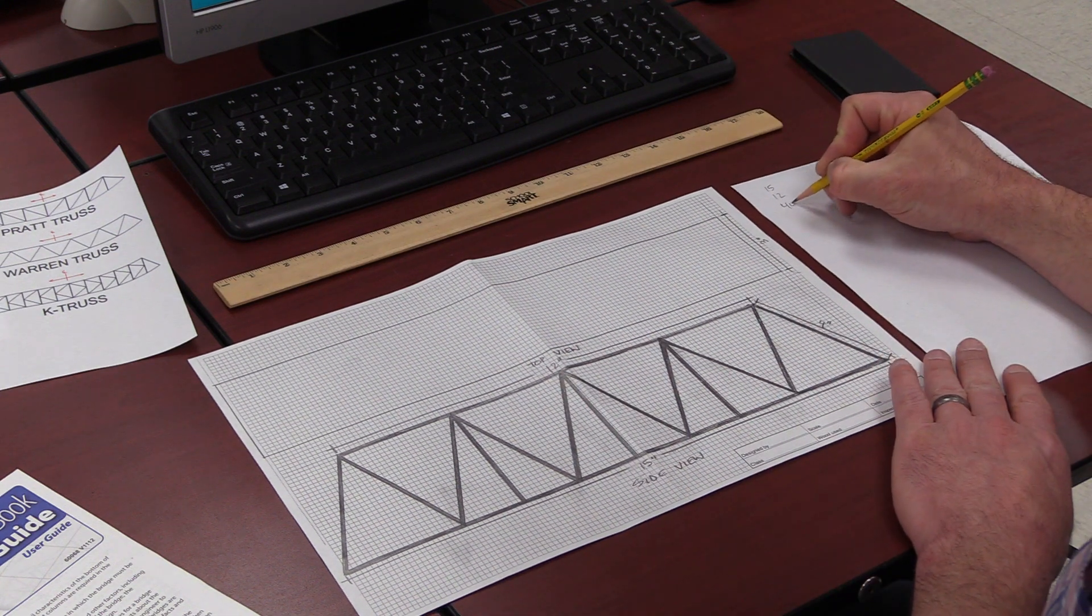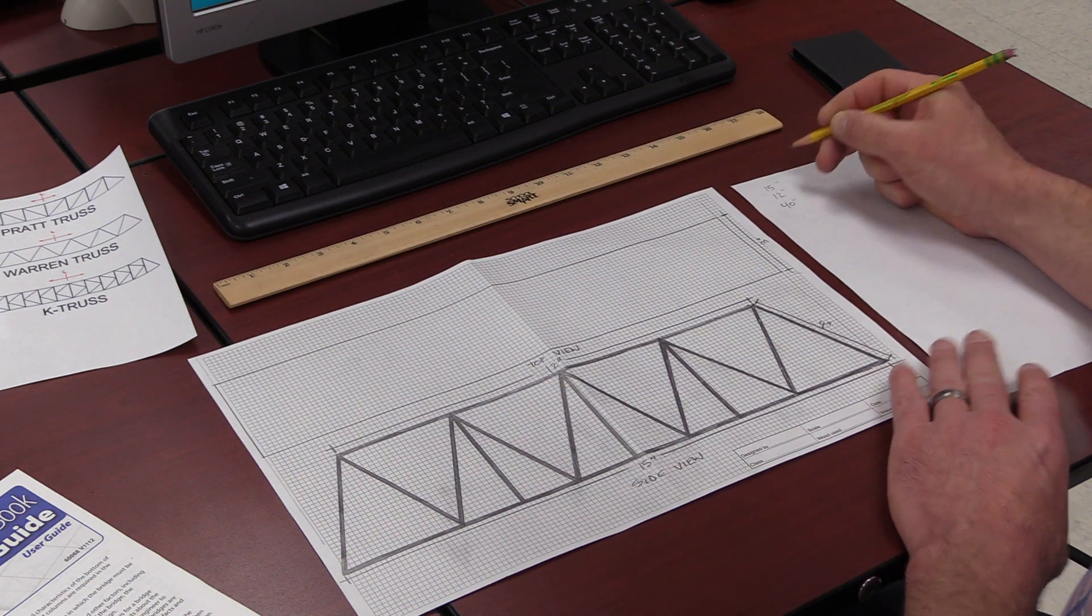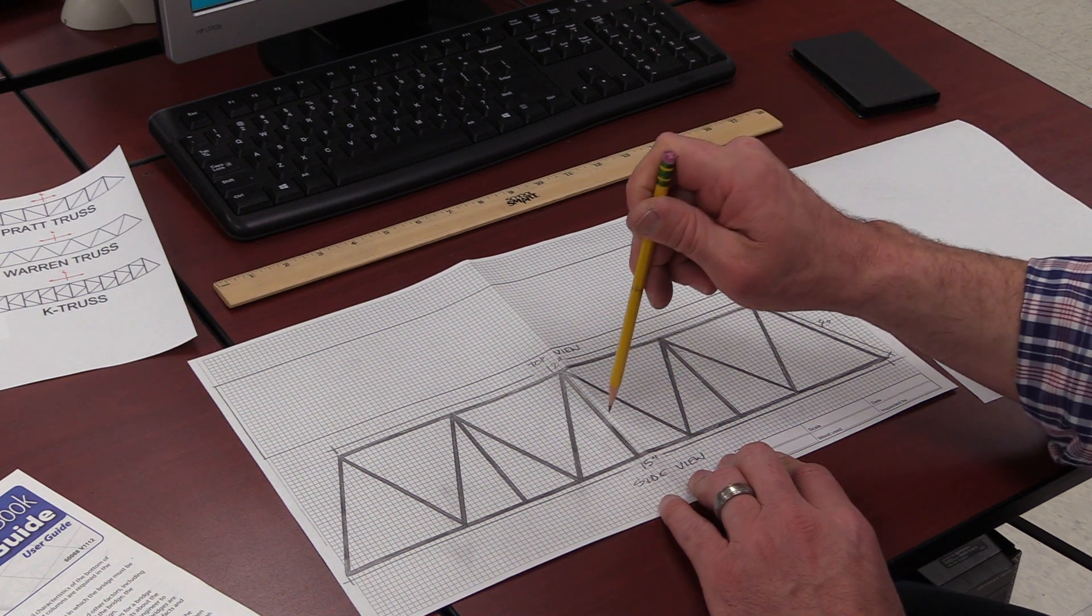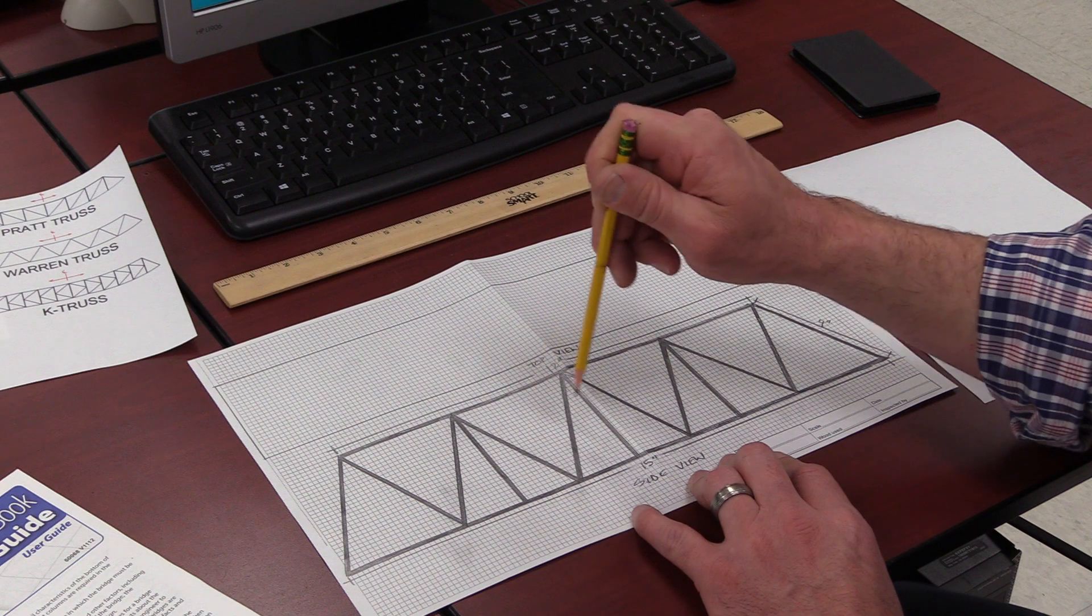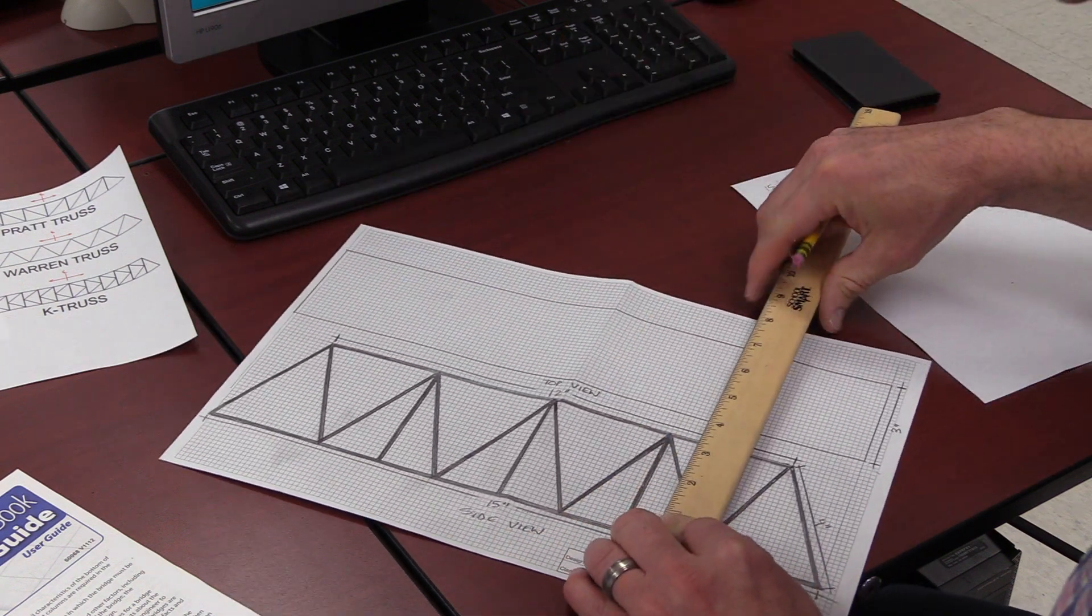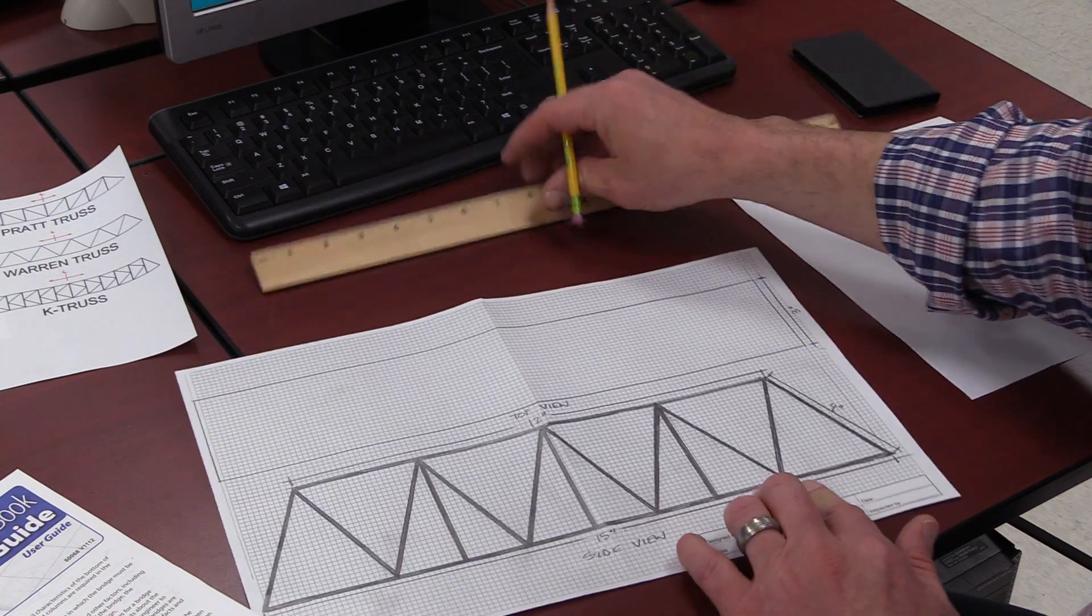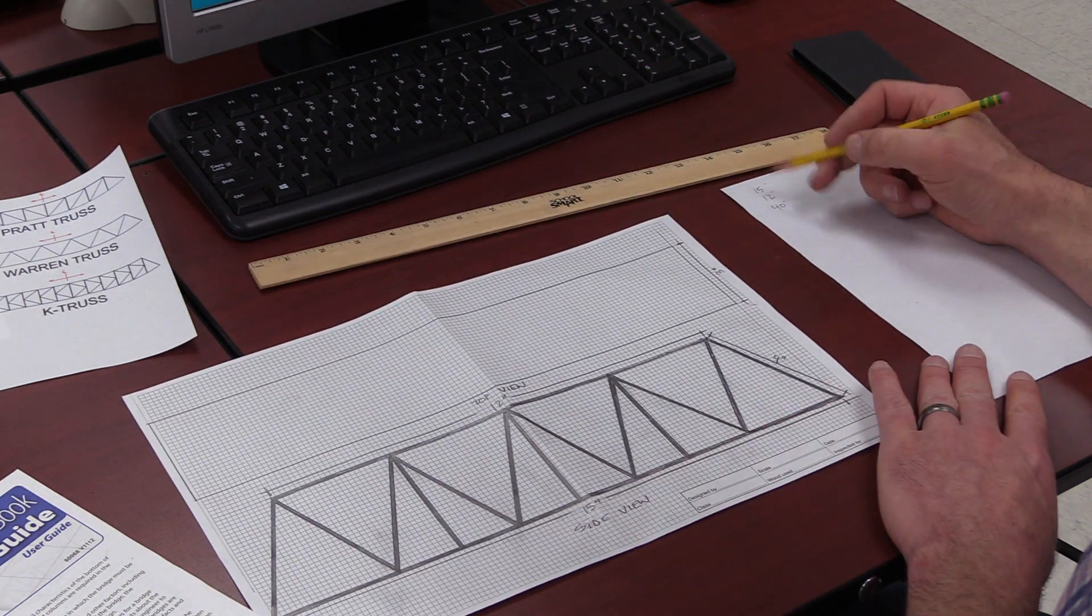And then the last thing to add up are these vertical webs. So I've got three of those and I know my bridge height was three and a half per my design. So three times three and a half.